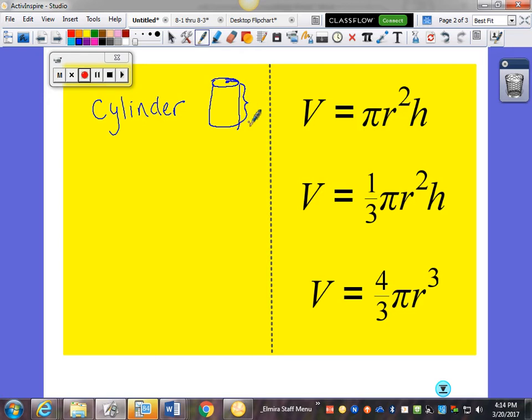The second one is the volume of a cone. I'm sure we've all seen like a party hat or an ice cream cone. Again, we need the radius, the distance from the center of the circle part to the outside, and the height. Notice the only difference between the cylinder formula and the cone formula is the one-third. Other than that, they're both pi r squared.